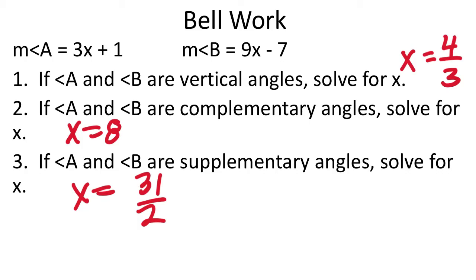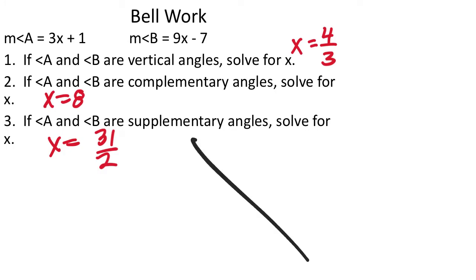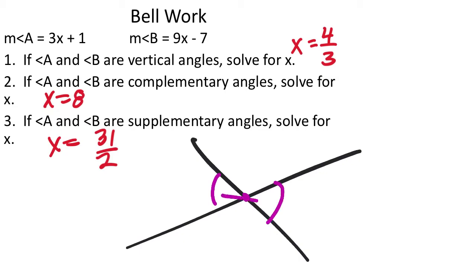So vertical angles — if we look at just a diagram, generally speaking, usually you're looking at two lines. It doesn't really matter if there's more lines coming out. But it's angles that are through the vertex, and the vertex is where the two lines intersect. So you'd say this angle would be vertical with this one because they're through the vertex, and that's a straight line right there. And that also means that these two angles in red are also vertical.